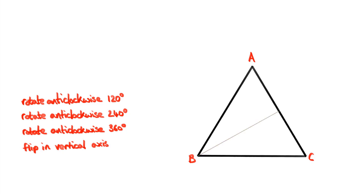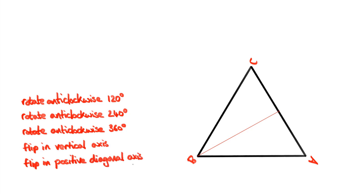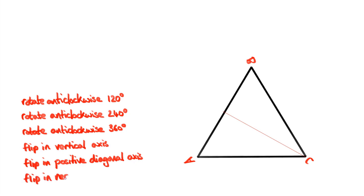We have two more mirror symmetries. One is a reflection in a diagonal line that goes through B — I'm calling this a positive diagonal line because the slope is positive. Again, reflection in this line leads to a triangle whose vertices in the anticlockwise direction are labelled A, C, B. Finally, if we flip through the remaining axis — the diagonal line going through vertex C, which I've called the negative diagonal axis because it slopes downwards — again the order of the vertex labels goes A, C, B. Because the order is the same for any of these flips, we should be able to get from one flip to another just by rotation.